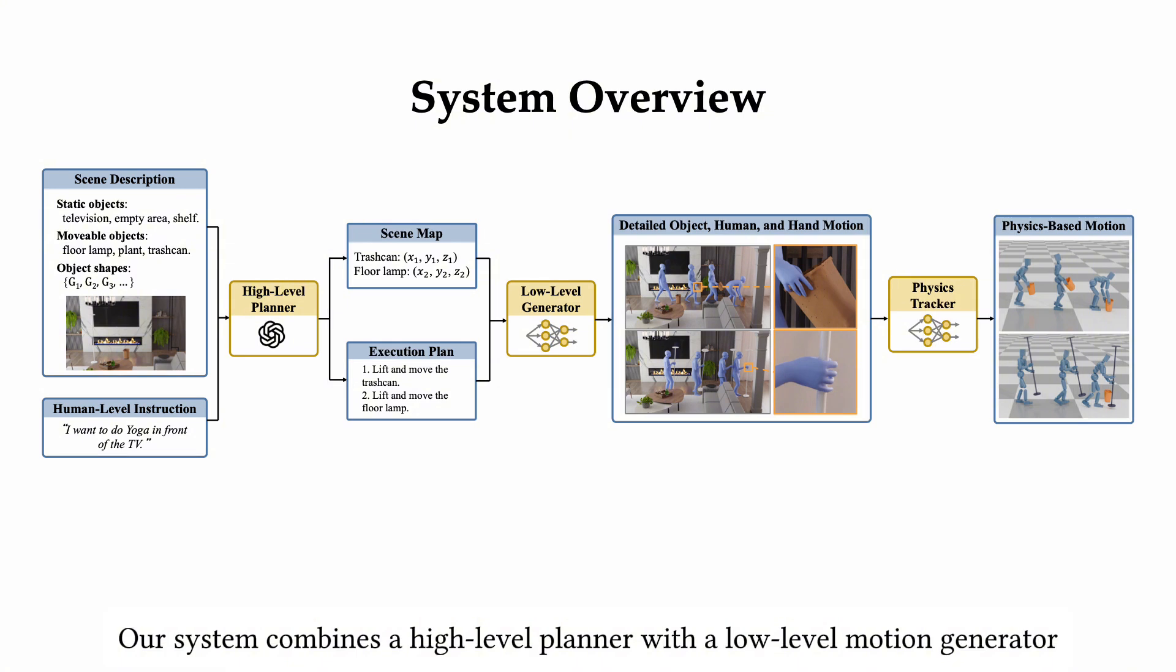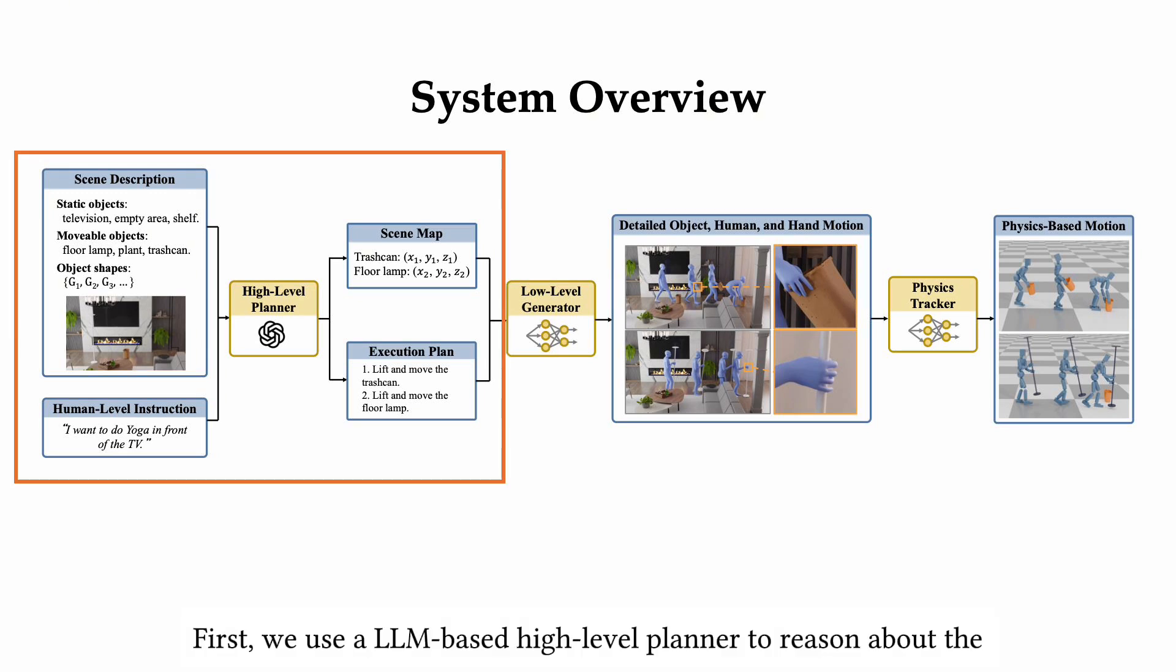Our system combines a high-level planner with a low-level motion generator to produce detailed movements that are physically plausible. First, we use an LLM-based high-level planner to reason about the human-level instructions and generate a scene map and an execution plan.